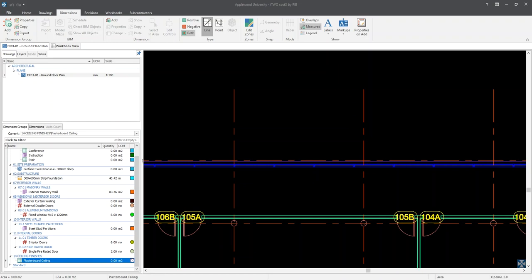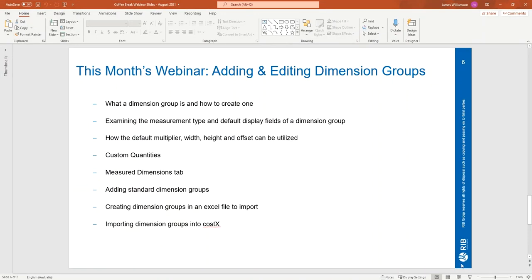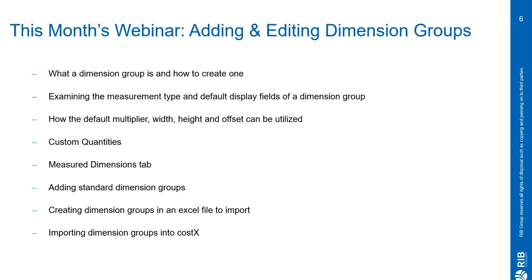Before I sign off, I'll conclude the topic of adding and editing dimension groups by giving a brief overview of what we've covered in today's webinar. Firstly, we looked at what a dimension group is and how they appear in the dimension list. We then moved on to creating dimension groups and placed them into folders and subfolders. We then examined the options for the measurement types, default displays, and the use of the default multiplier, width, height, and offset fields. The next step was creating custom quantities and their relevant expressions under the measured dimensions tab for the internal doors. We moved on to adding standard dimension groups and how they can be imported via a CSV file. And finally, we talked about the template to create a list of dimension groups in an Excel file and importing this into i2CostX after saving it as a CSV file.